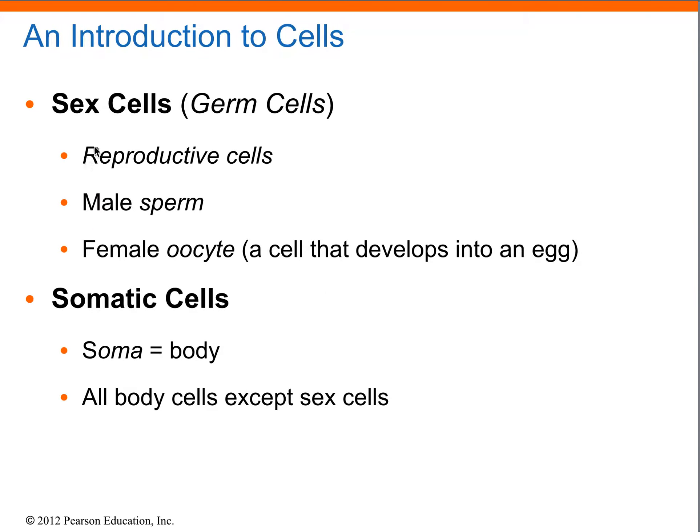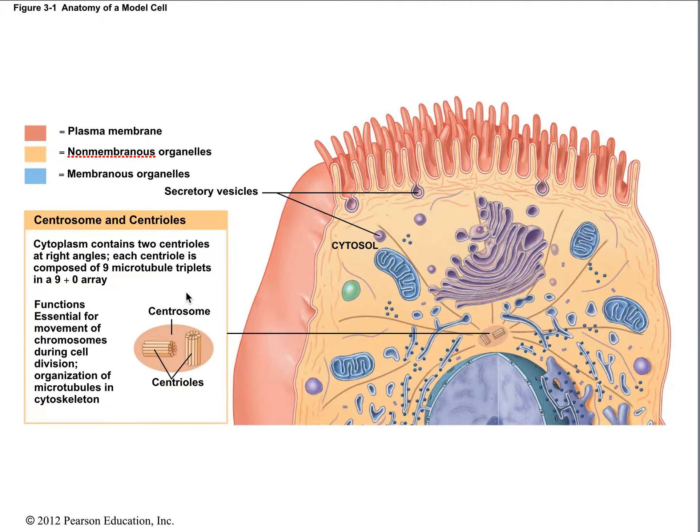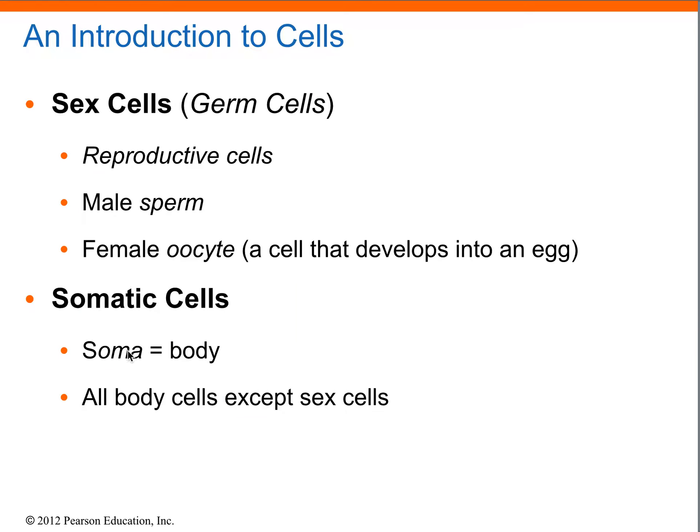We have two different types of cells. We have sex cells and we have somatic cells. Somatic just refers to the body.